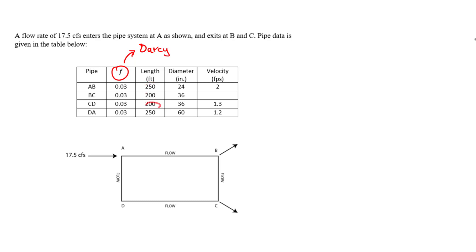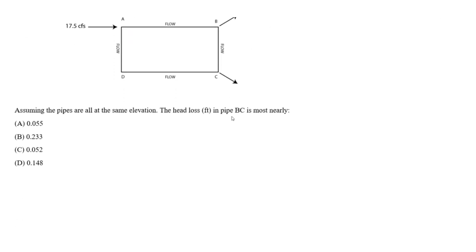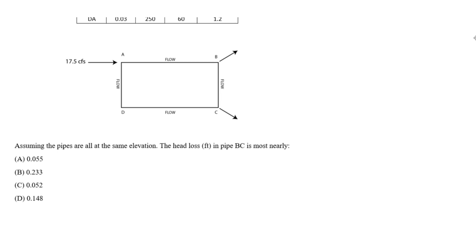We're also given the length and diameter for each pipe. The diameters for BC and CD are the same, while AB and DA are different. We're given velocities for all pipes except BC. Assuming all pipes are at the same elevation — meaning nodes A, B, C, and D have no change in elevation — we want to find the head loss in feet in pipe BC.